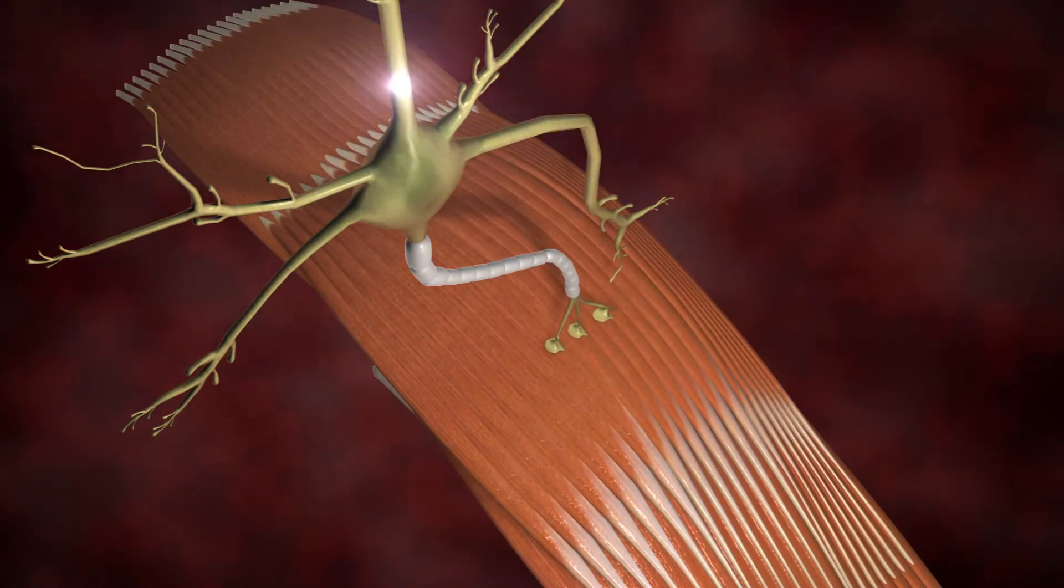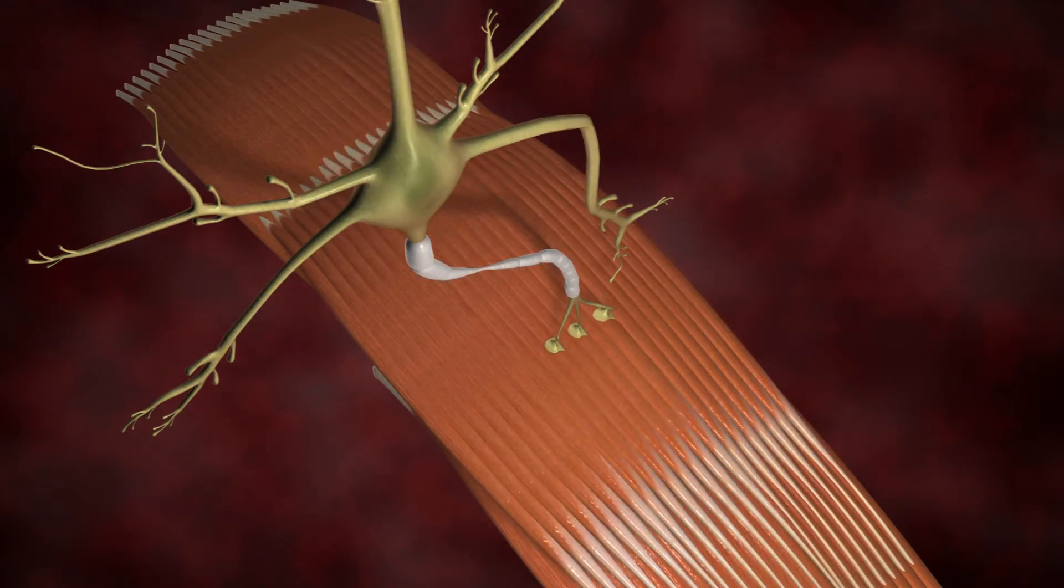Motor neurons break down in Lou Gehrig's disease. Without stimulation, voluntary muscles progressively atrophy.